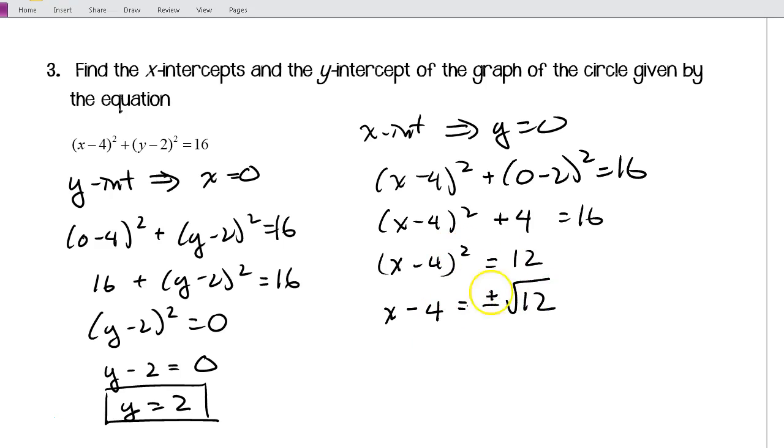Remember, when you take a square root, you have to have a positive and a negative, which is going to be positive or negative 2√3. So, we'll add 4 to both sides and we get x is equal to 4 ± 2√3. And these are our 2 x-intercepts. So, if we wanted to graph this, we could see that it would just touch the y-axis at 2, but it would go through the x-axis at these two points.